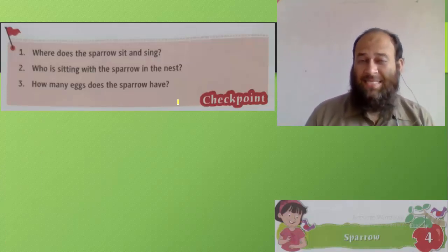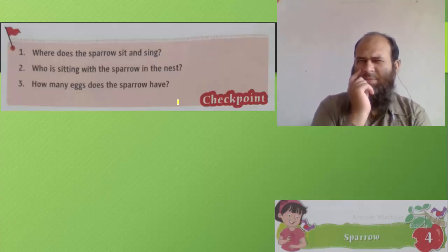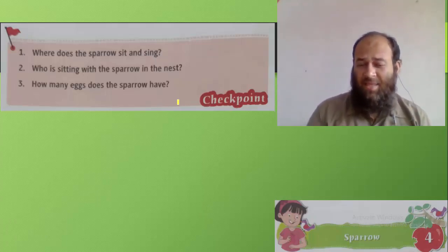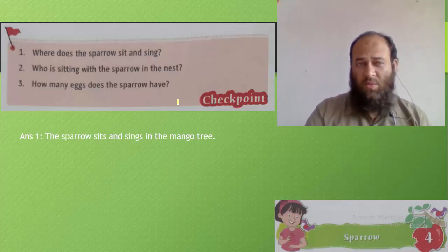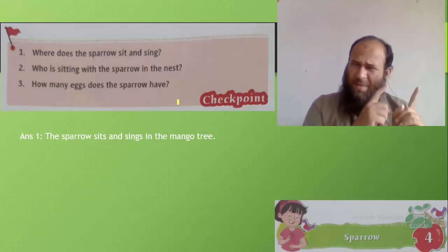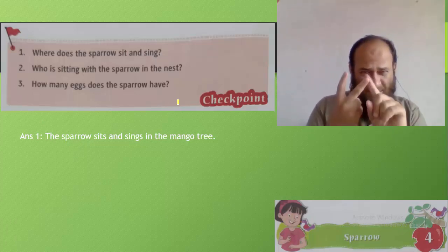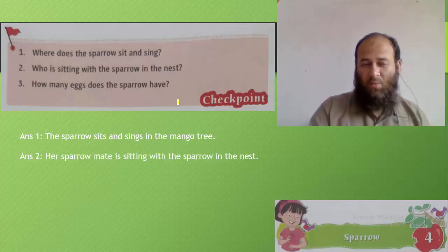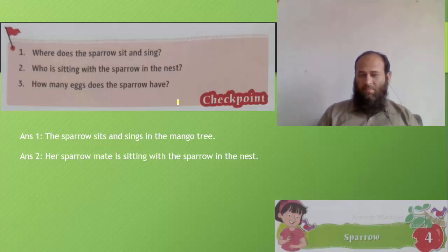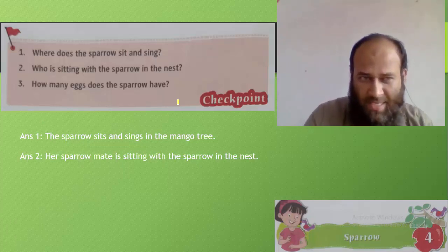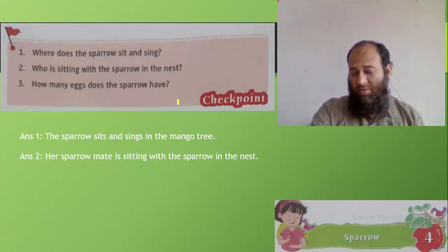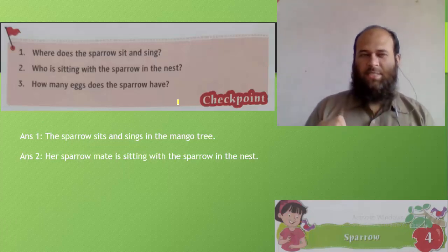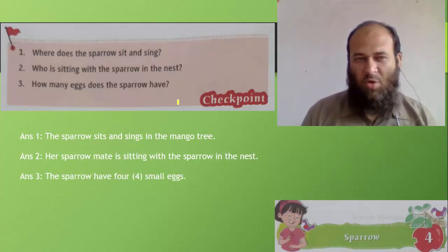Where does the sparrow sit and sing? Where was the sparrow sitting — in the class? In the house? No, she was sitting in the mango tree. Who is sitting with the sparrow in the nest? Was the sparrow alone? No. There was a second one — the sparrow was sitting with her sparrow mate. And how many eggs does the sparrow have? There were four eggs. The sparrow has four small eggs in the nest.